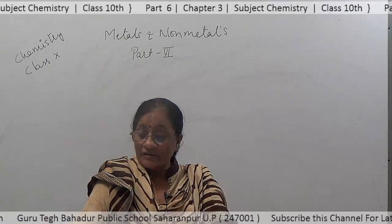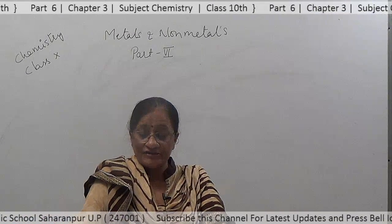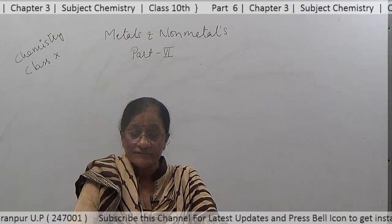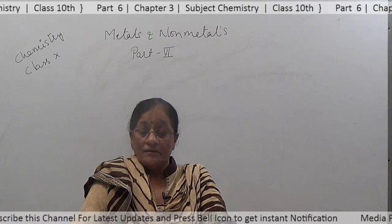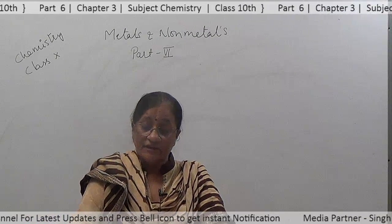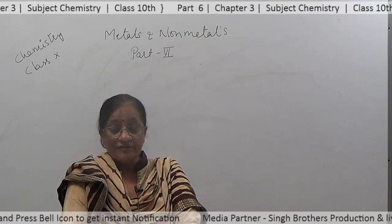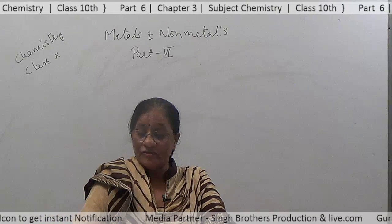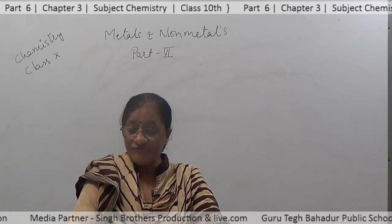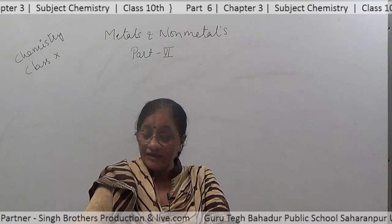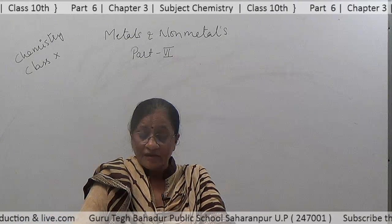During the discussion of chemical properties of metals, we observed that metals react with a number of reagents and form different compounds. But why do metals and non-metals react and form compounds? As we discussed in Class 9 about electronic configuration of elements, noble gases have completely filled valence shells and show very little chemical activity.